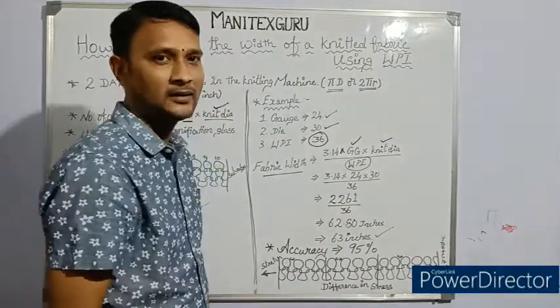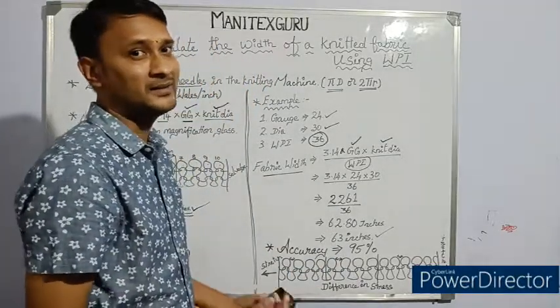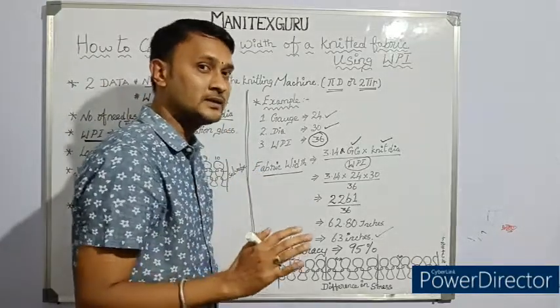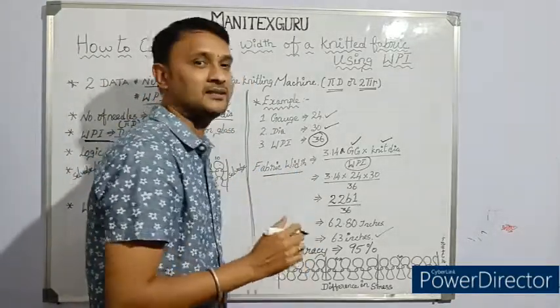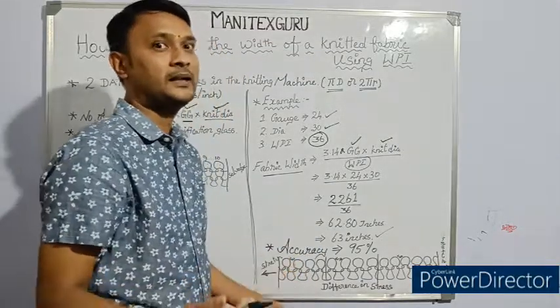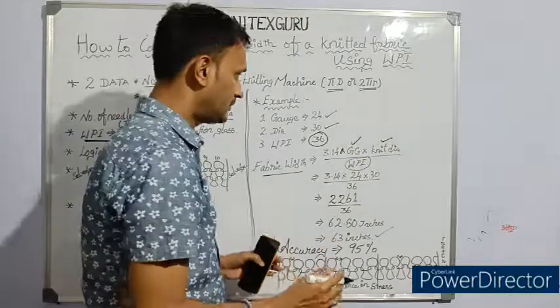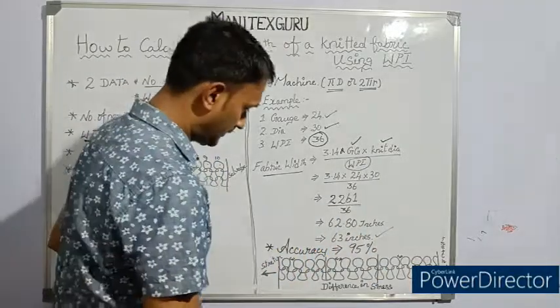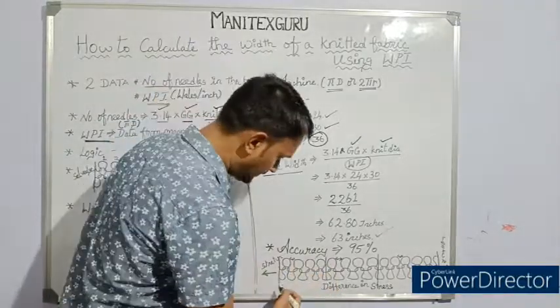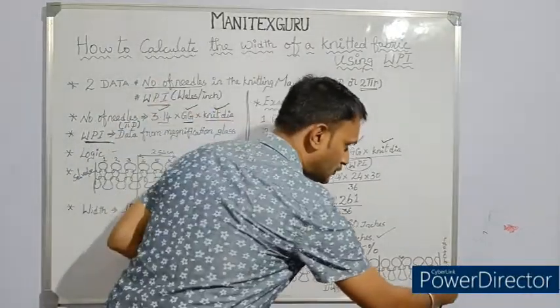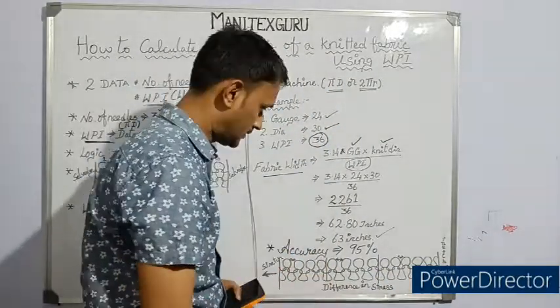This is how we can calculate the width of the fabric in a very easiest manner. But the accuracy of this methodology is limited to 95%. The reason behind this is since we are calculating the width of the fabric in open width. Just consider this is an open width fabric. During finishing, we used to stretch the fabrics in both the selvedges.